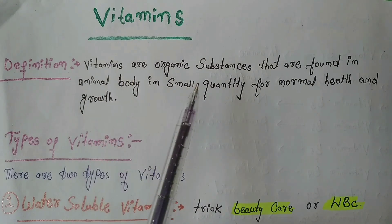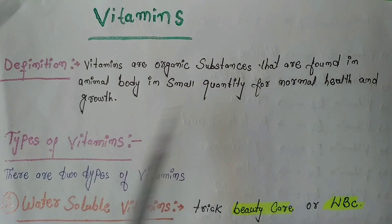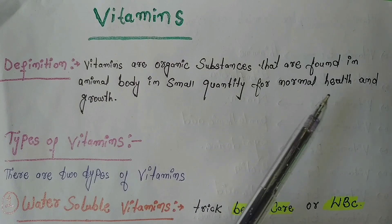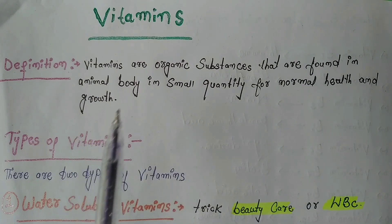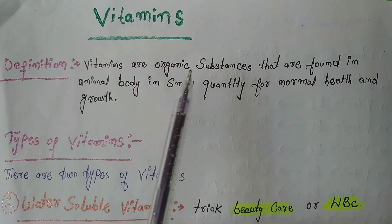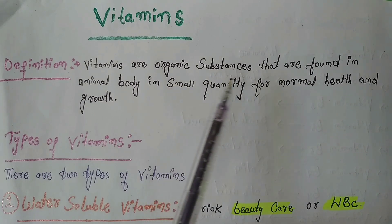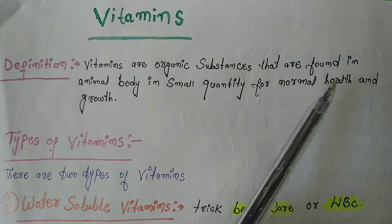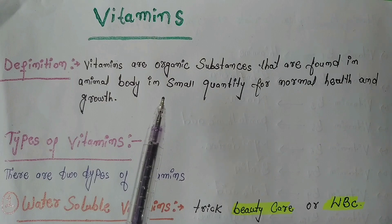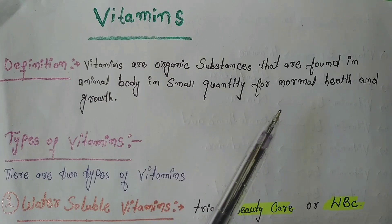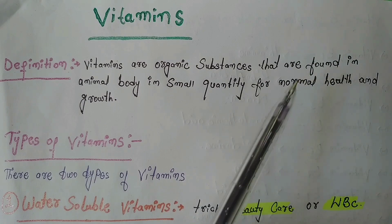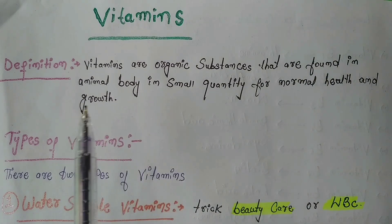What are vitamins? Vitamins are organic substances that are found in the animal body in small quantities, and they help in normal health and growth.